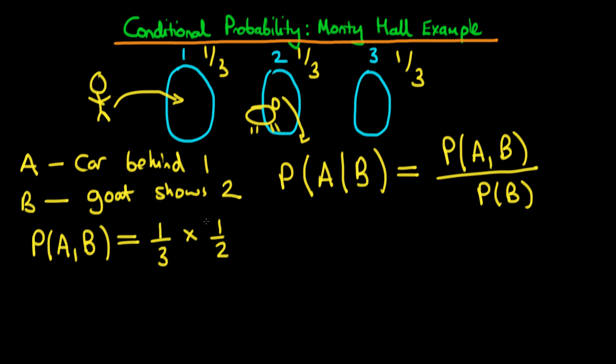To be clear: this one half arises because half the time the host opens door two and half the time he opens door three. When the car is behind door one, he can open either remaining door with equal probability. So the numerator P(A and B) is one third times one half, which is one sixth.